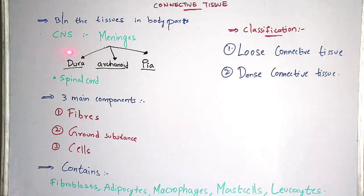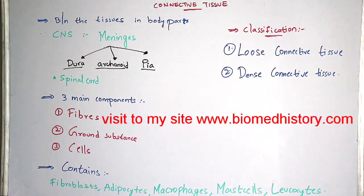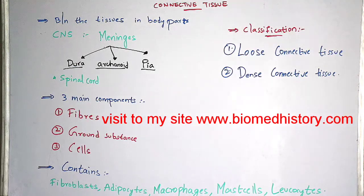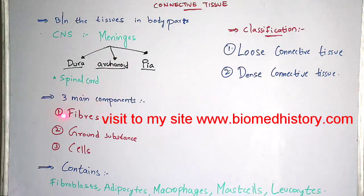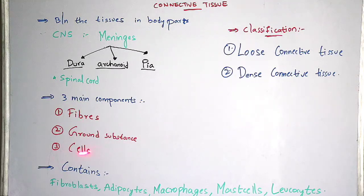Not only the central nervous system — this connective tissue is also seen in the spinal cord. This connective tissue consists of three main components: first is fibers, second is ground substance, and third is cells.